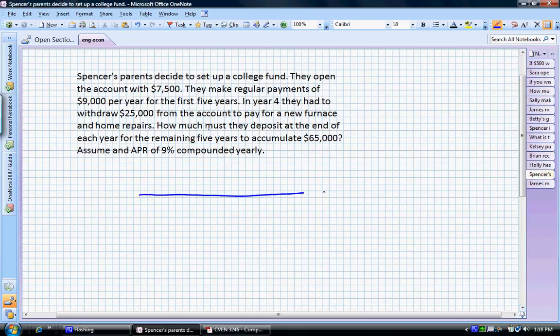So let's start out with our time axis here. At time zero, we're going to make our initial investment of $7,500. And then for the first five years, year one, two, three, four, and five, we're going to make an initial investment of A1 equaling $9,000. Let's label that zero, one, two, three, four, and five.